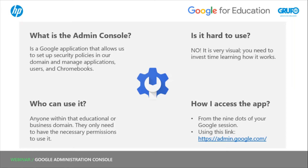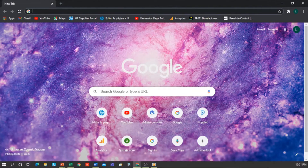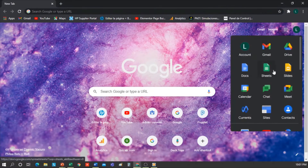How do I access the console? You can do it in two ways: from the nine dots of your Google session where all the applications appear, you look for the one that says Administration. Or you can also do it from this link, admin.google.com. I'm going to go to my Chrome, which is already opened from my Google account, and from the nine dots, search for the admin option.